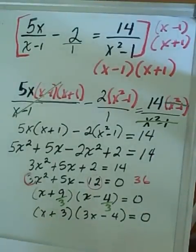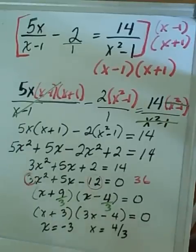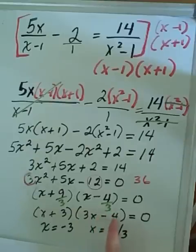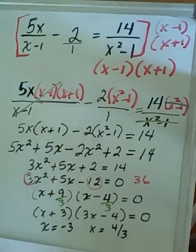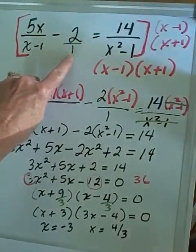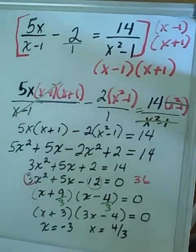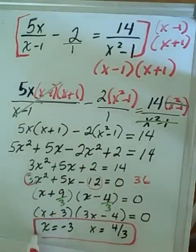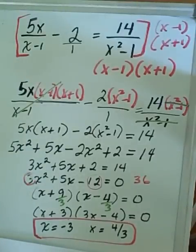Bottoms up gives us 3x minus 4 equals 0. Using the zero product property, we get two solutions: x equals negative 3, or x equals positive 4 thirds. Now we check that these don't make the denominator 0. The values that make the denominator 0 are x equals 1 and x equals negative 1. Since neither solution equals those, both x equals negative 3 and x equals 4 thirds are valid solutions.